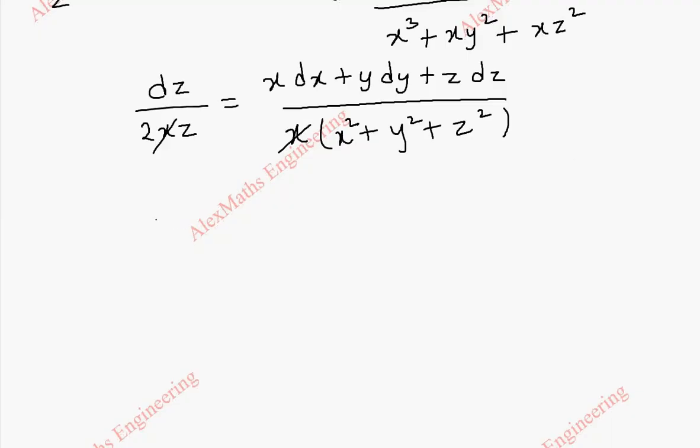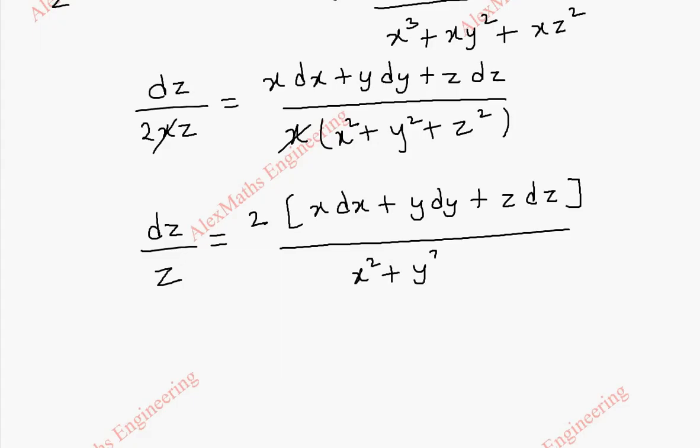Now we are left with dz by z and these two we can take to the other side numerator. So 2 times x dx plus y dy plus z dz whole divided by x squared plus y squared plus z squared.